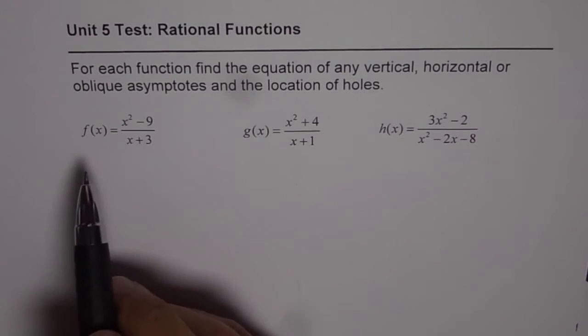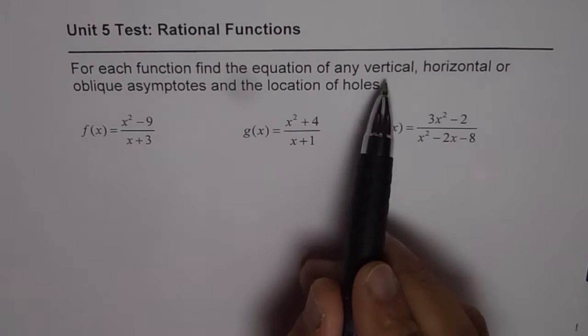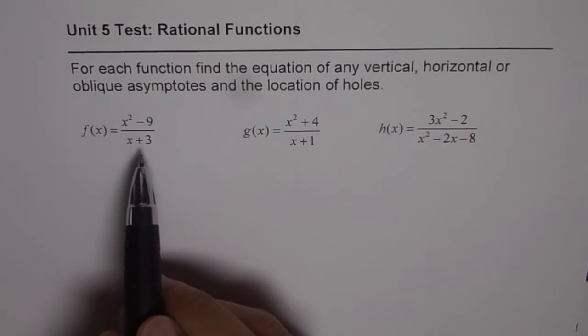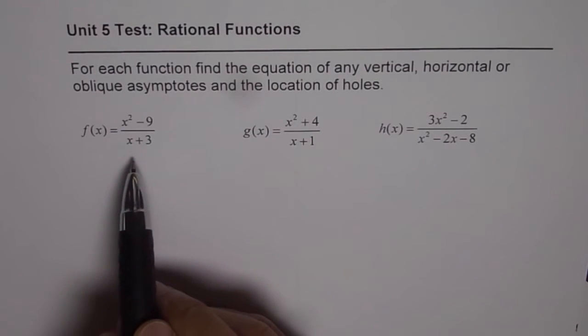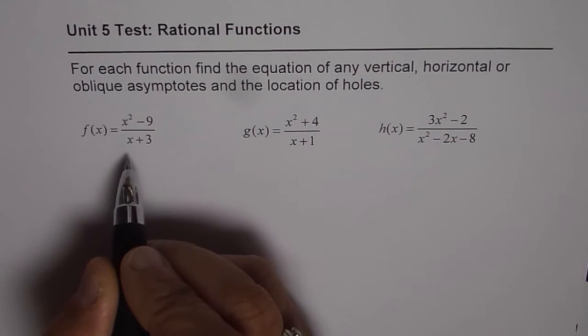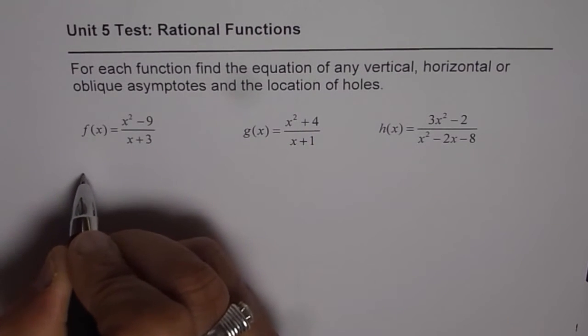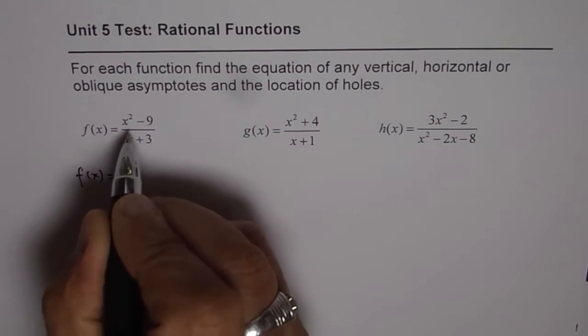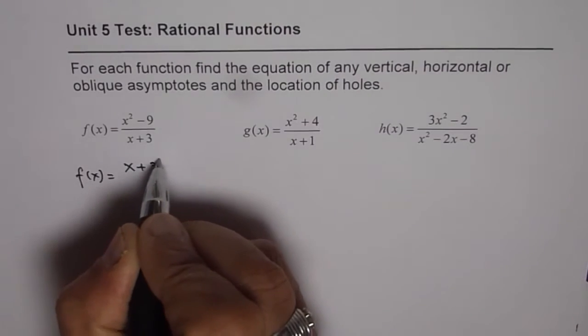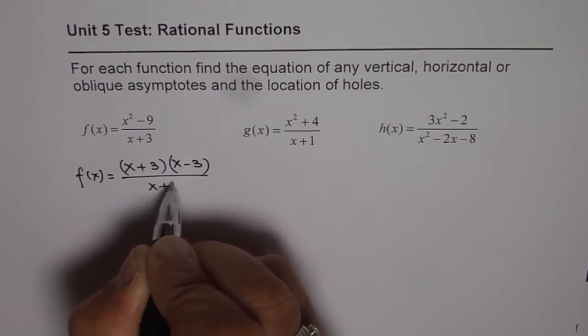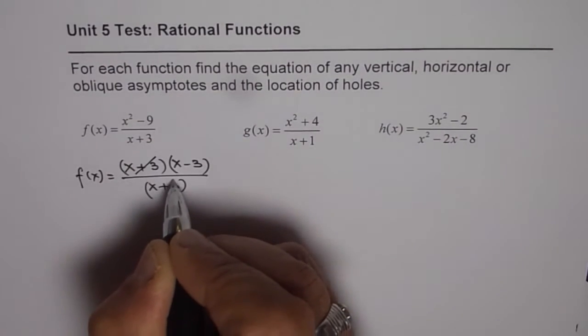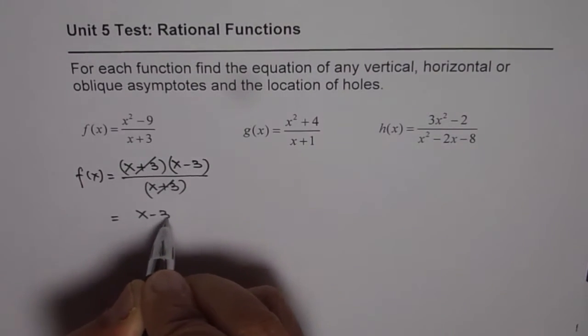Now let us do it. Vertical, horizontal or oblique asymptotes. When you look at the rational function, if the degree of numerator is higher than the denominator, we do not have horizontal asymptote. If the degree is one higher, we have oblique asymptote. Now in this case, let us factor and check if we really have an oblique asymptote. So when we factor, what do we get? x square minus 9 gives us x plus 3 times x minus 3 and the denominator is x plus 3.